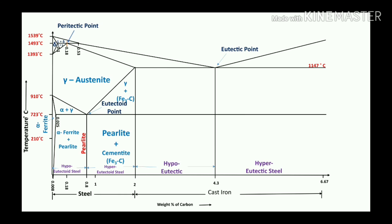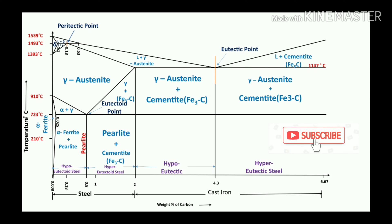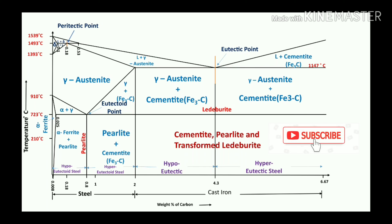In the cast iron category, the eutectic point occurs at 4.3% carbon and 1147°C. Eutectic means the liquid phase converts into two solids. Before 4.3% that is hypo-eutectic, and after 4.3% that is hyper-eutectic. So liquid plus gamma austenite, and liquid plus cementite. Cementite represents enrichment by carbon. In between: gamma austenite plus cementite — this is ledeburite. At room temperature: cementite, pearlite, and transformed ledeburite.